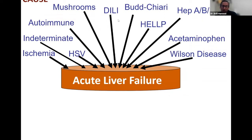Another common cause in the U.S. is drug-induced liver injury, depending on which medications are used. There are also supplements, and very rarely mushrooms. We can see autoimmune liver disease, ischemia or shock liver, herpes and other viruses including EBV, CMV, and adenovirus. About one third of cases in many parts of the world can be indeterminate, meaning no exact etiology was determined.